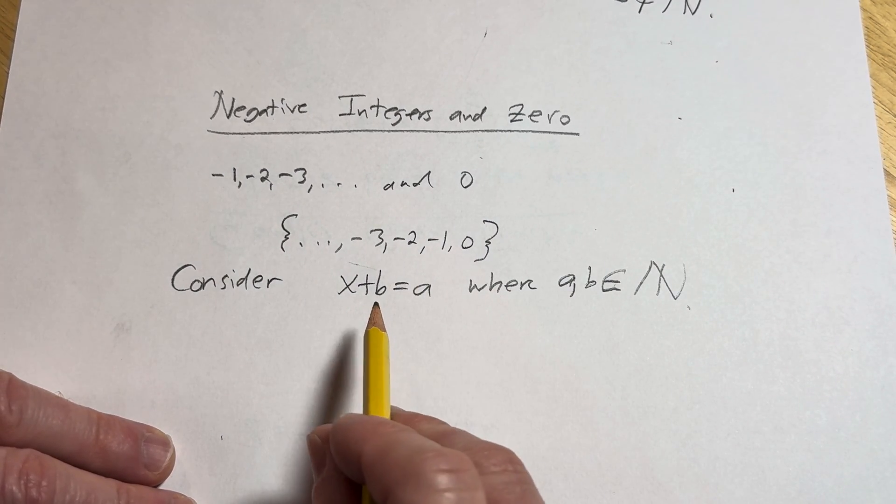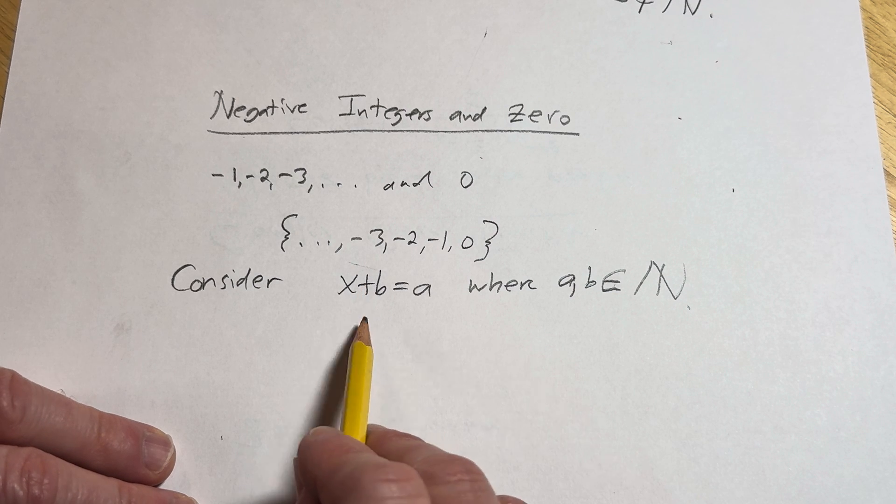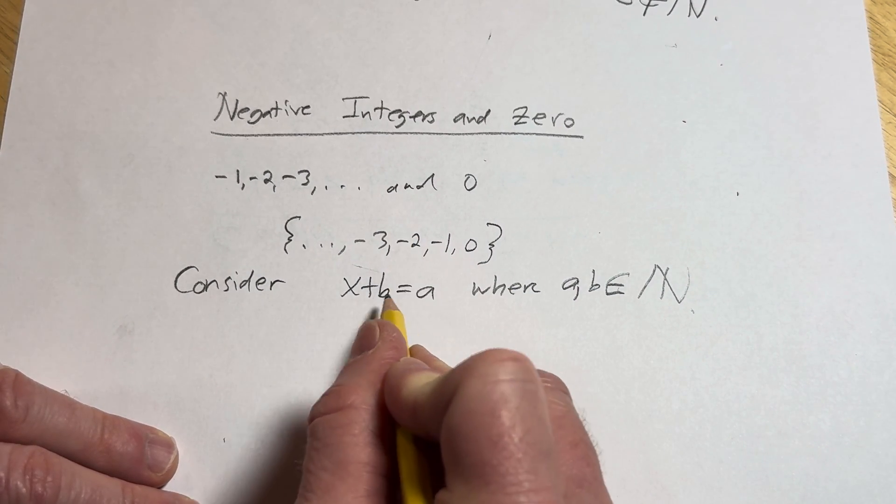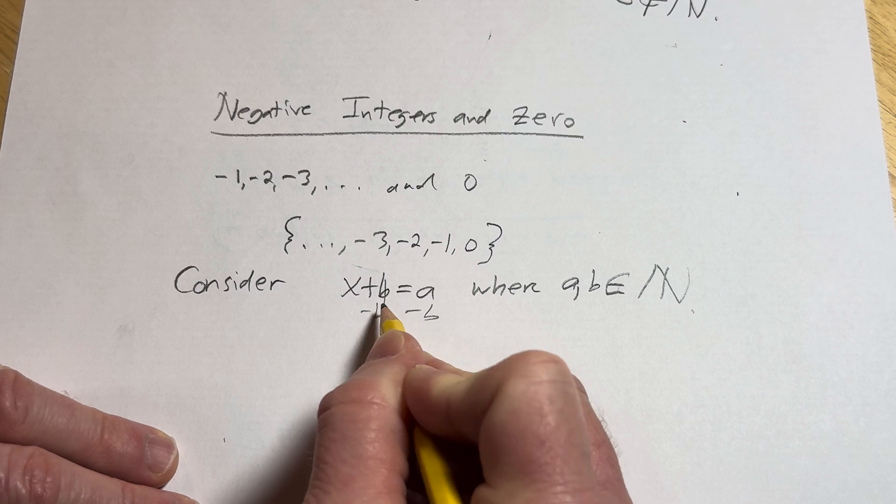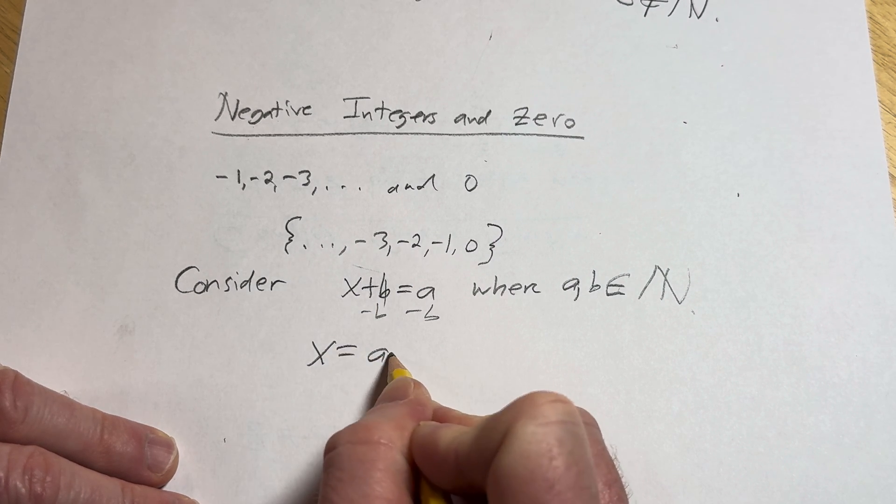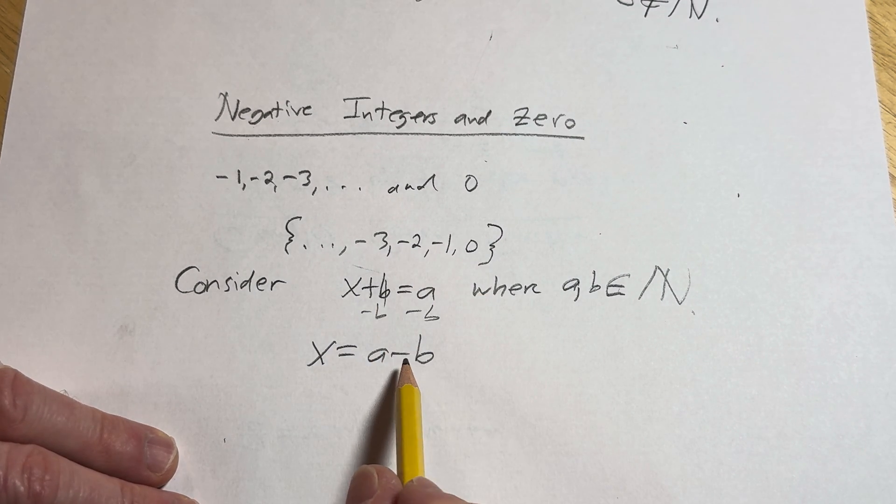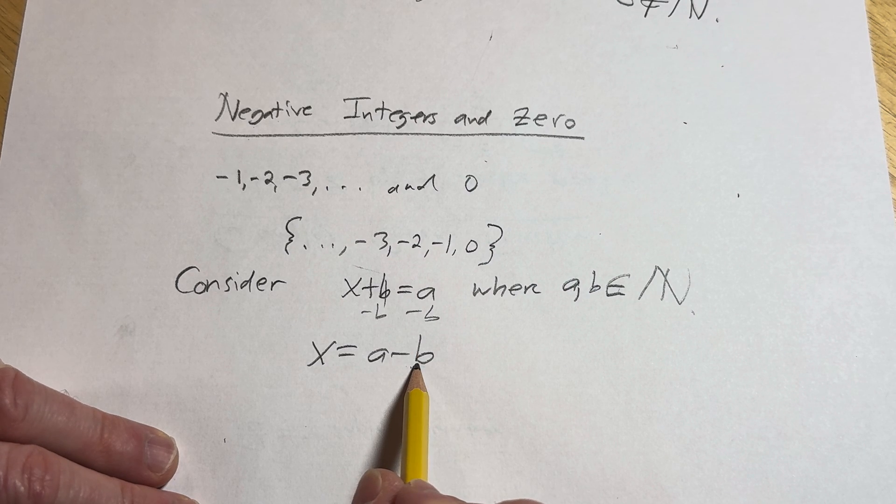If we solve this for x, if we want to find solutions to this equation, we would subtract b from both sides. And so we end up with x equals a minus b. Now we know that this is not necessarily a natural number.